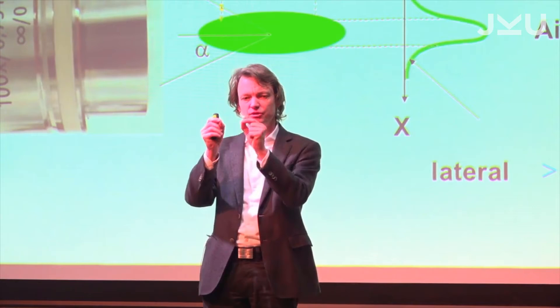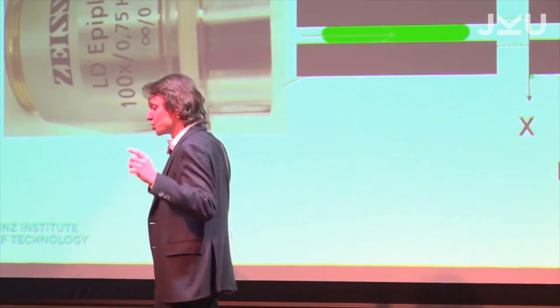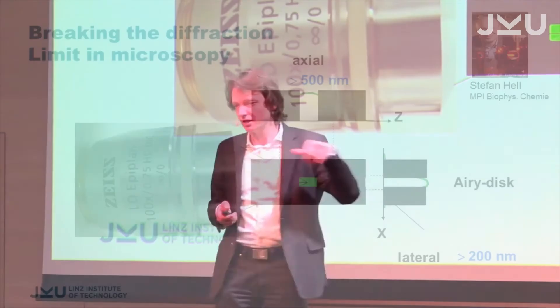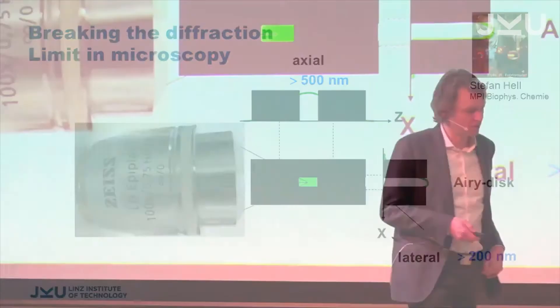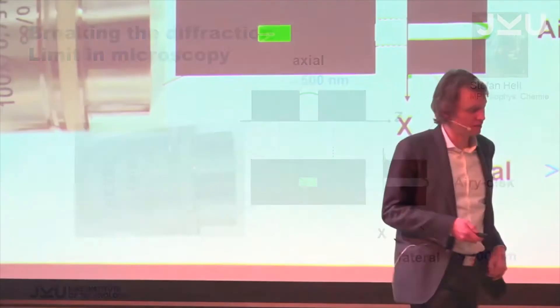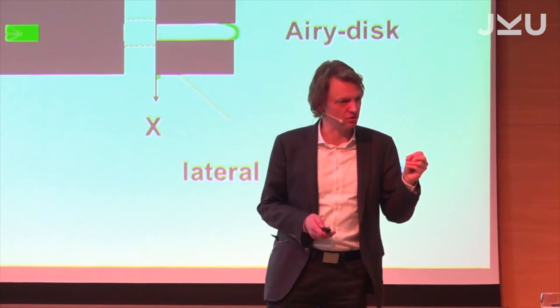He had the idea: I excite all these molecules, but if I could switch off to the left, to the right, in front and behind the focal plane — if I could switch off the molecules immediately after I have excited them — then only in a very small spot the molecules remain in the excited state. They then fluoresce, and you have the pre-knowledge that this fluorescence must come from this small spot. Stimulated emission is the natural counterplay of fluorescence, so you can use stimulated emission to switch off fluorescence.